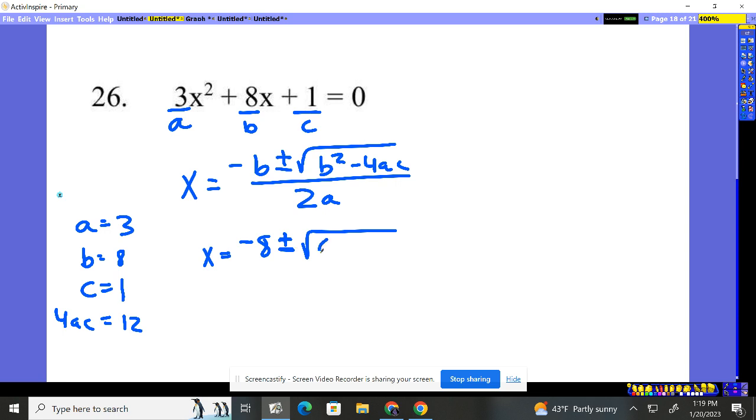b squared, 8 squared. I'm going to go ahead and say, hey, that's 64 minus, and then I just look over here, 12. I'll divide it by 2 times 3, which is 6.